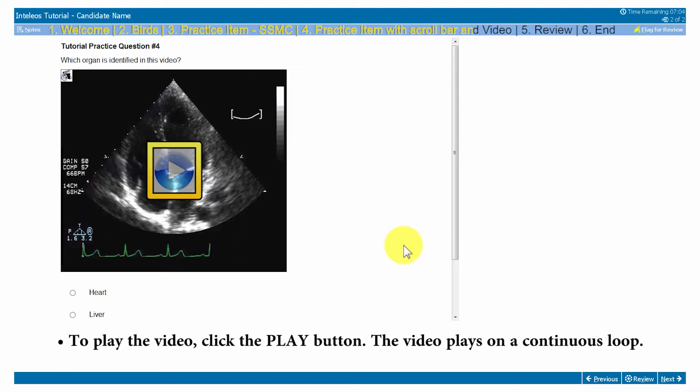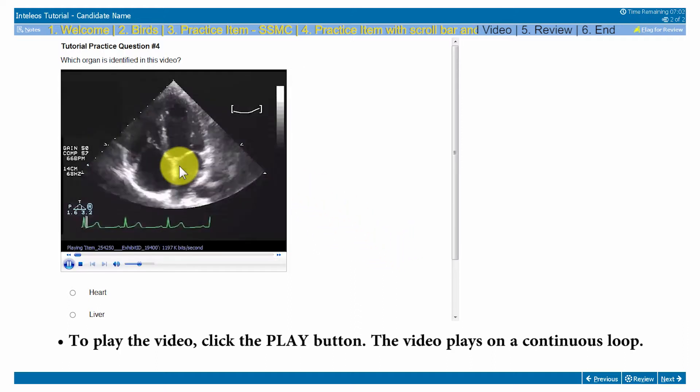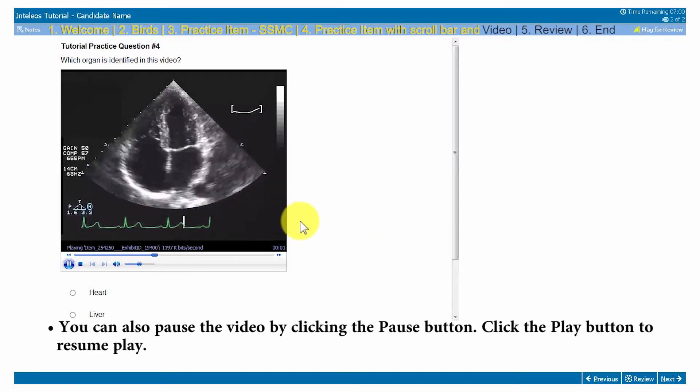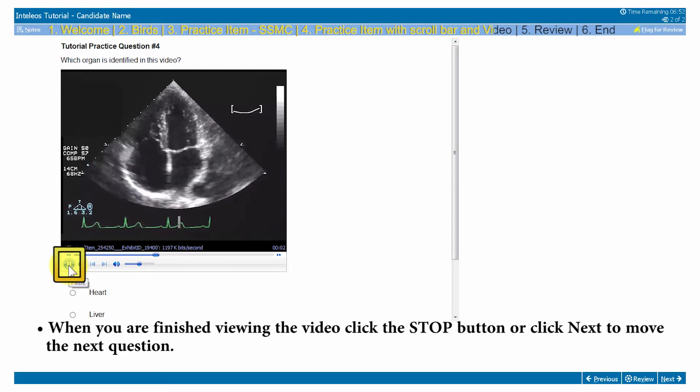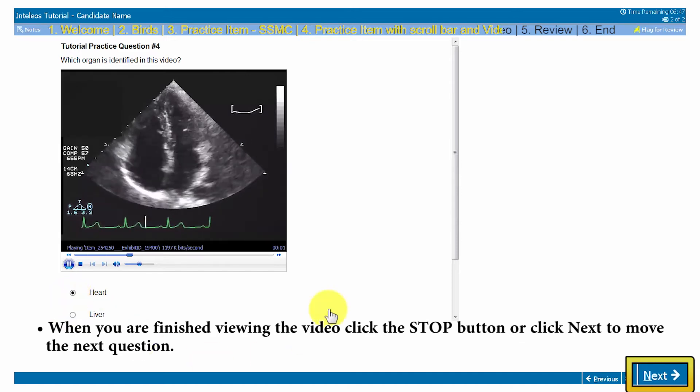To play the video, click the play button. The video plays on a continuous loop. You can also pause the video by clicking the pause button. Click the play button to resume play. When you are finished viewing the video, click the stop button or click the next button to move to the next question.